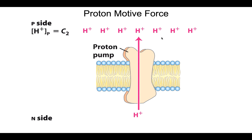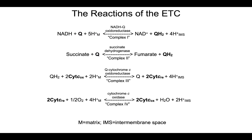The electron transport chain sets up the proton motive force, which ATP synthase will use to make ATP — and we'll watch that in the next video. To summarize, remember the stoichiometry of these four reactions: what's being reduced, what's being oxidized, and which complexes couple that exergonic redox reaction to the endergonic pumping of protons against their concentration gradient.